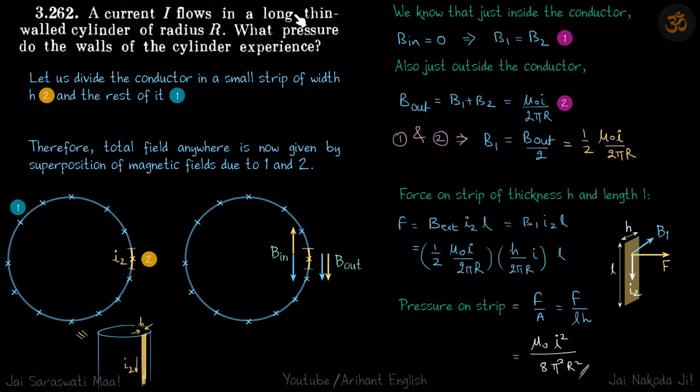A current I flows in a long thin-walled cylinder of radius r. What pressure do the walls of the cylinder experience?